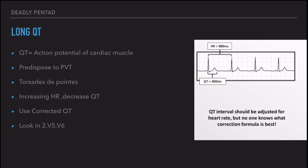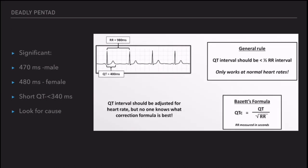Whenever there is an increase in heart rate, it can decrease the QT interval, so always use corrected QT. Measure QT in leads V2, V5, and V6. A simple trick: the QT interval should be less than half of the RR interval — if it is more than half, it is prolonged. Corrected QT can be calculated with many formulas; the most commonly used is Bazett's formula: corrected QT equals QT divided by the square root of the RR interval.